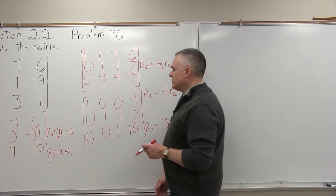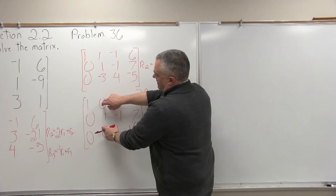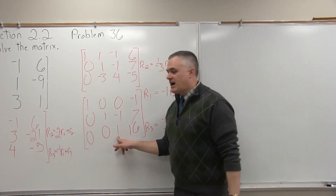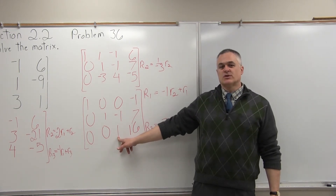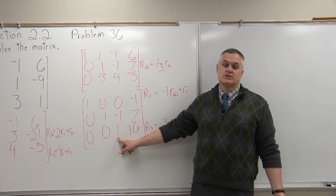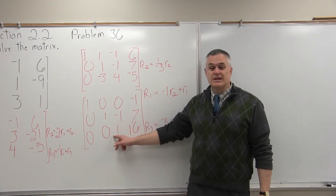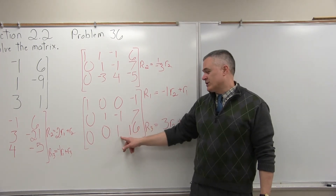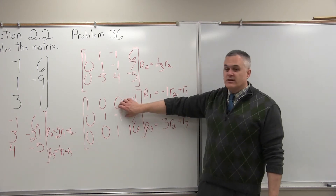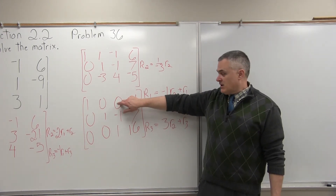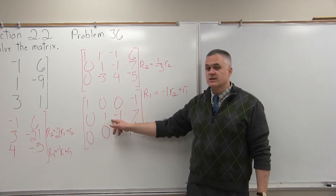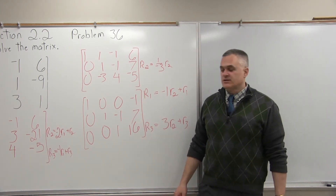Step 4 is complete — I've zeroed out the other values in column 2. Step 5: go to the third position in the bottom row and turn it into a 1. Well, it just turned into a 1 by itself, which is good — I don't have to do any work. Step 6 is to zero out the other values of that third column. One of them is already a 0, so the last thing I need to do is zero out the minus 1 in row 2.